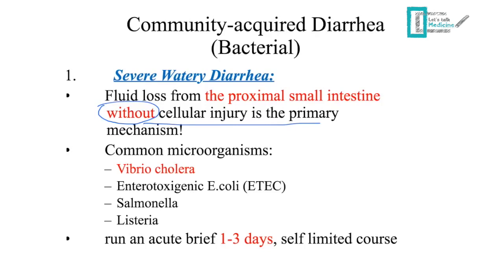Common microorganisms causing watery diarrhea include Vibrio cholerae, enterotoxigenic E. coli, Salmonella, and Listeria. Watery diarrhea develops rapidly and lasts a brief period of one to three days. Most are self-limited, except Vibrio cholerae, which can cause severe dehydration and requires treatment. The most severe kind of watery diarrhea is caused by Vibrio cholerae.